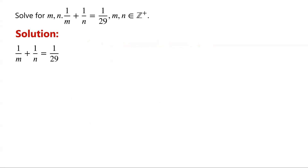How can we solve this equation? Typically, there are several approaches to solving such equations. One method involves rewriting the equation as a product of two algebraic expressions in the relevant variables, set equal to a constant. Since the variables of interest are integers, each algebraic expression must be an integer factor of the constant. This leads to a system of equations, and by solving the system, we can find the integer solutions to the original equation. We will now solve the equation using this method.